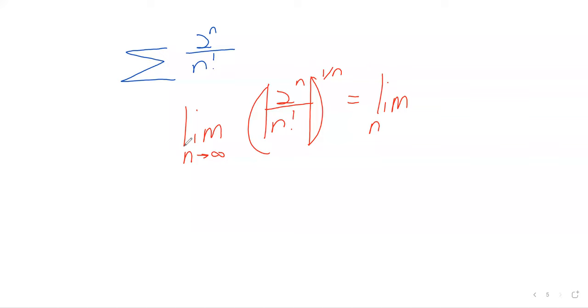If we try the root test here, two to the n is positive, n factorial is positive. So we've got the absolute values, now we can recognize everything's positive, so we can get rid of the absolute values. And we reach this point here, the limit as n goes to infinity of two divided by n factorial to the one over n power.